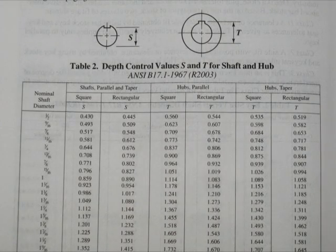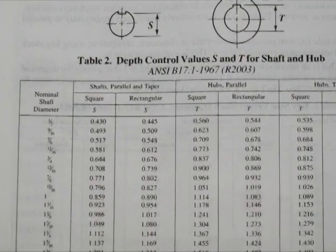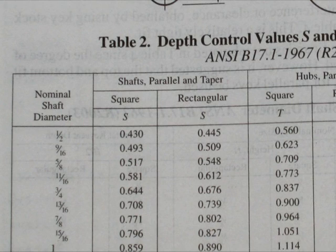Then we can see our Table 2 that gives us our S and T dimensions, or our S and T depth control values. So we're looking at 1/2 inch diameter shaft. For a square key on the shaft, I have a S value of 0.430 or 430 thousandths of an inch. And for my hub value, my T value for a square key seat, I have a T value of 0.560 thousandths of an inch.